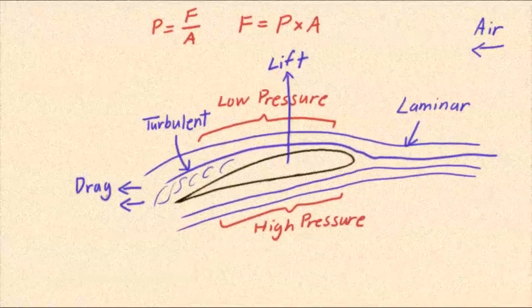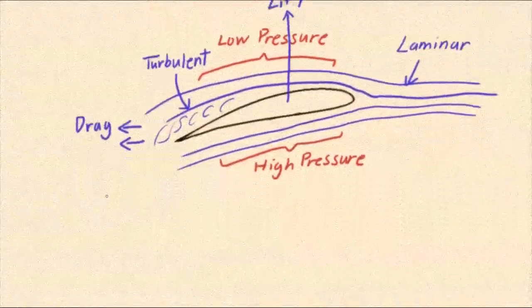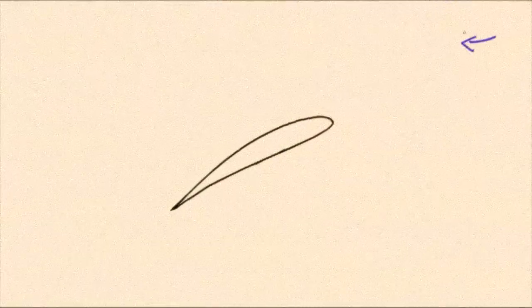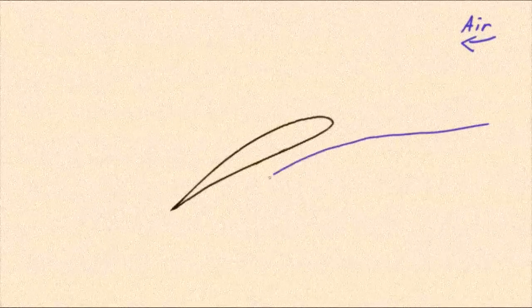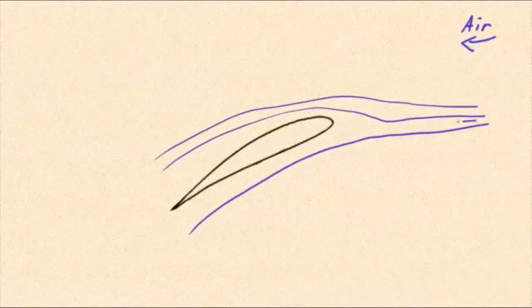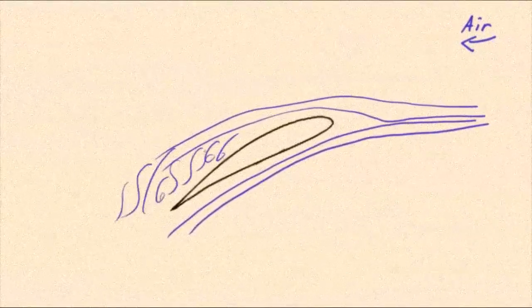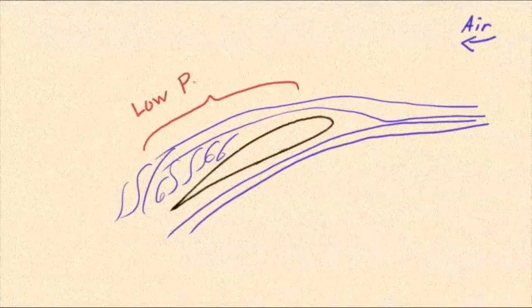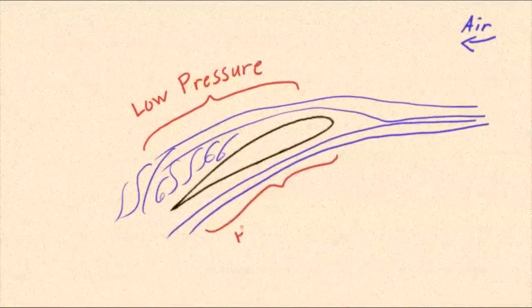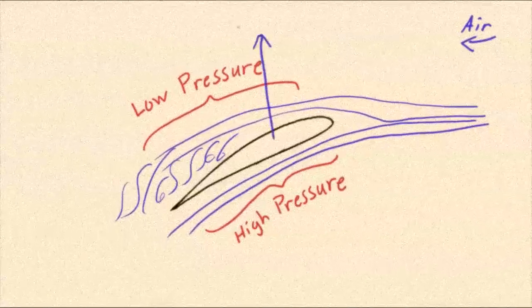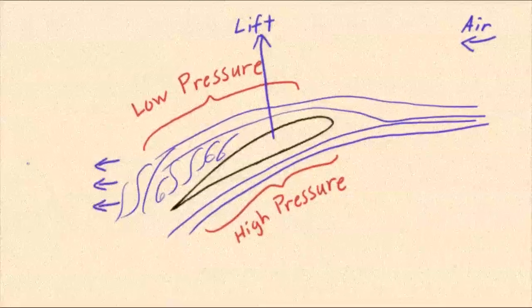Drag pushes the wing backwards while lift pushes the wing upward. If we take this same airfoil and tilt it upwards, it creates greater pressure differences and changes the area of the wing that the pressure acts on. If you remember the equation we talked about earlier, both the area and the pressure affect the force. This is why it is important to determine the best angle for the airfoil to generate the optimal amount of lift and drag for your application.